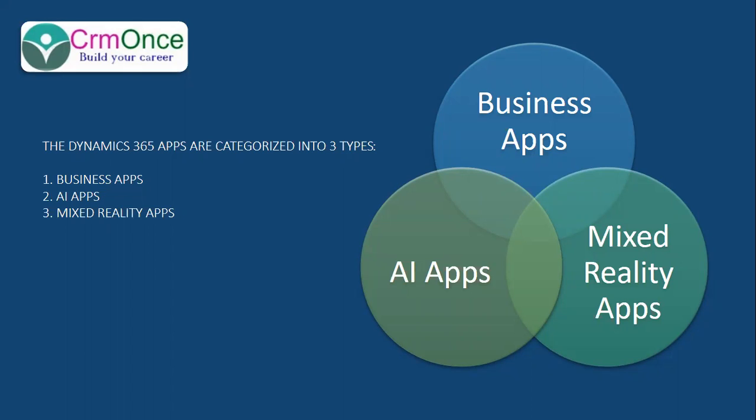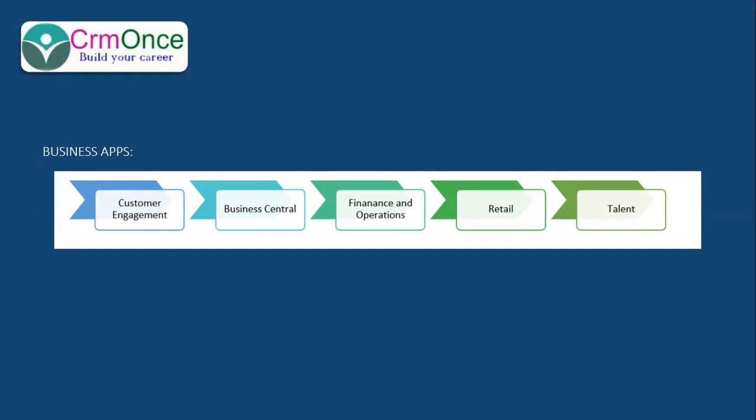Let's see one by one what apps fall into which type. First, coming to the business apps — under the business apps, again we have a categorization. The first one is Customer Engagement, then Business Central, Finance and Operations, Retail, and Talent. These five apps we call Business Apps. Customer Engagement covers CRM Sales, Marketing, Service, Project Management, and Field Service.